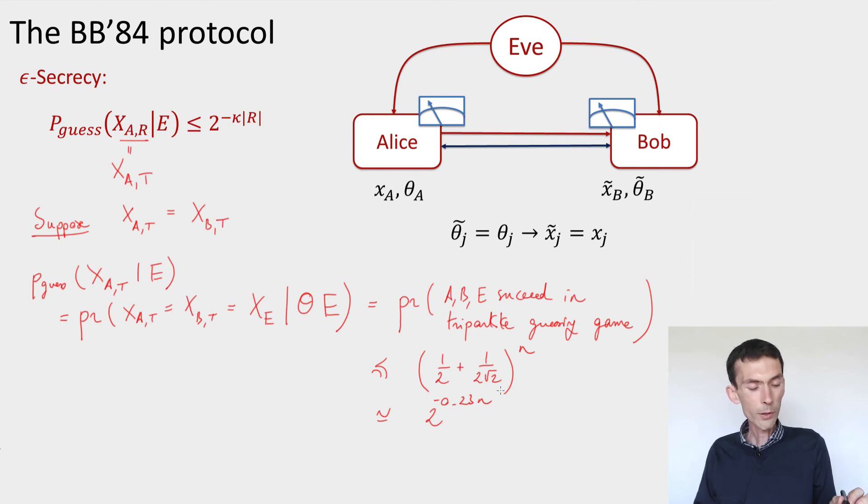Under these two simplifying assumptions that the rounds used for the raw key and the rounds used for testing are the same and that the tests pass with certainty, security for BB84 via privacy amplification is reduced to showing that the success probability of A, B, and E in the tripartite guessing game is as small as possible, which is something we've already seen. And that establishes security.